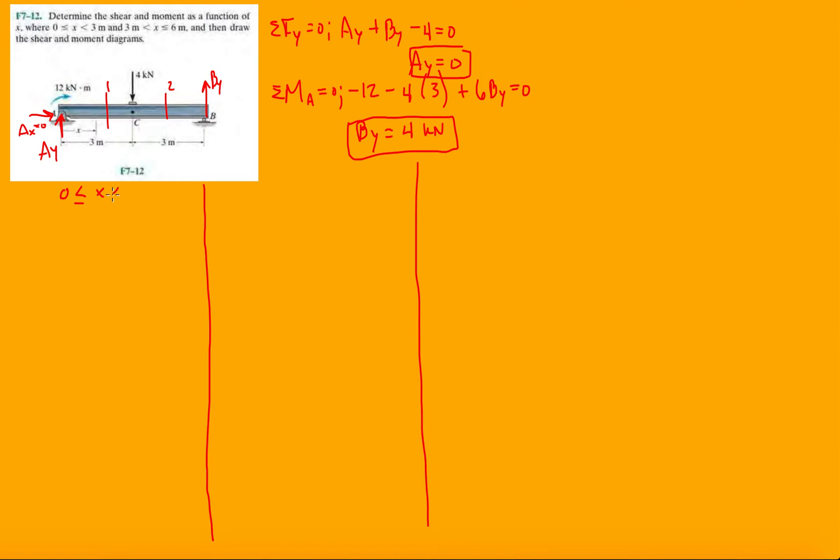This will be between zero, three, and six. First off we start with a chunk here on the left side. So we made a cut at one and now we're looking at just a little piece of that beam. AY and AX are zero, so it's pretty much nothing other than the twelve kilonewton meter, and then our internal forces V1 and our internal moment M1.